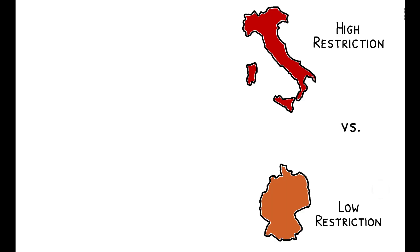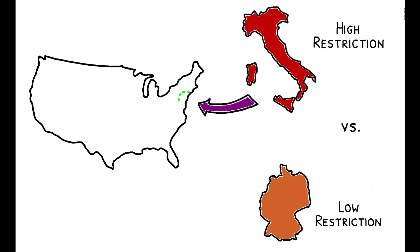The authors used these differences to measure local exposure to the quotas within the U.S. Because immigrants tended to settle in areas with already established communities from their home countries, for example, Italians tended to immigrate to areas with already existing Italian communities, local labor markets who happened to have large immigrant communities from high-restriction countries were more exposed to the quotas.